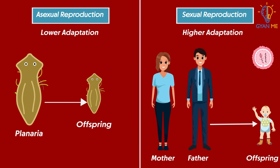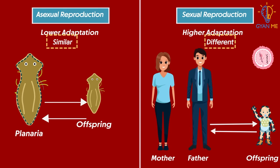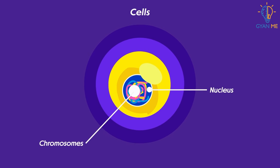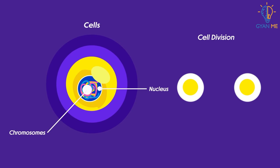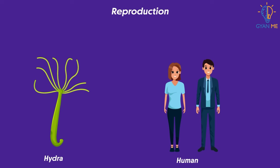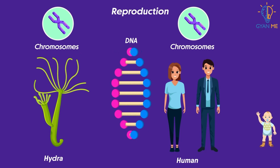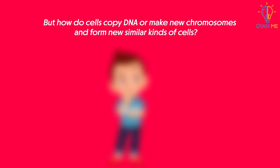Organisms look similar or different because of their body designs, which are either similar or different, and these body designs are inherited from their parents during reproduction. The blueprints for these body designs should be similar or different accordingly. In class 9, we learned that chromosomes in the nucleus of a cell contain these blueprints of body designs, and that all organisms inherit them during cell division that takes place during reproduction. Thus, reproduction at its most basic level involves making copies of the DNA blueprints — or chromosomes that contain this DNA — of the body design. But how do cells copy DNA, make new chromosomes, and form new similar kinds of cells? Think and try to find an answer, or we will answer it in our next video. Thank you!